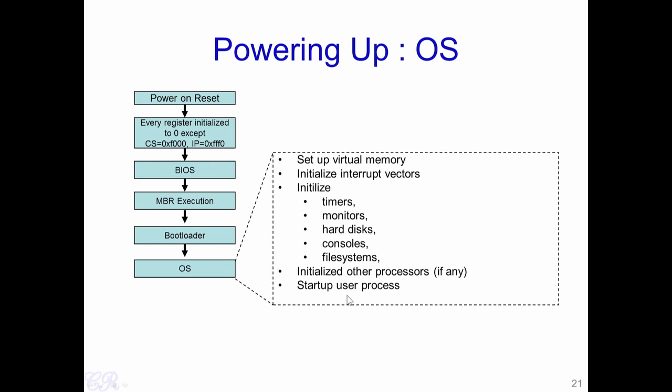In a future video we will see what the first user process is. This user process is the first process that executes in user space. All the previous boot steps execute in kernel space; it is only at this point in the boot sequence that a user process begins to execute. This first user process then spawns various jobs, user processes, daemons, and so on. The shell is then used by the user to run various programs and commands.